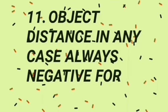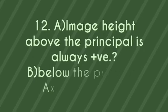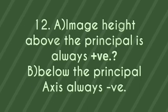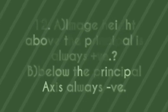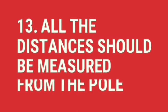Object distance in any case always negative for any mirror. Image height above the principal axis is always positive. Below the principal axis always negative. All the distances should be measured from the pole.